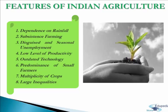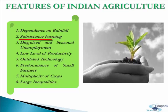Indian agriculture is characterized by certain special features, such as dependence on rainfall. Due to lack of irrigation facilities, Indian agriculture basically depends on rainfall — good rainfall results in good crops and bad rainfall results in bad crops. That's why Indian agriculture is said to be gambling with the monsoon. The rains are inadequate, irregular, and unevenly distributed among different regions, leading to uncertainty in Indian agriculture.